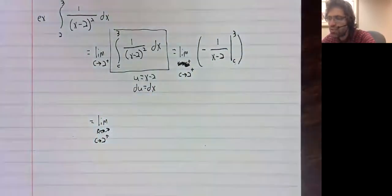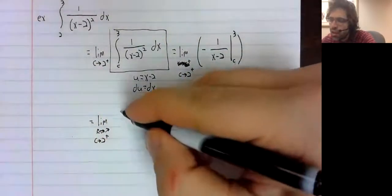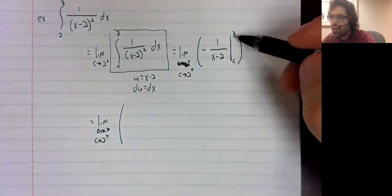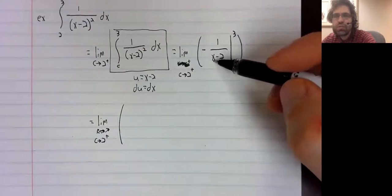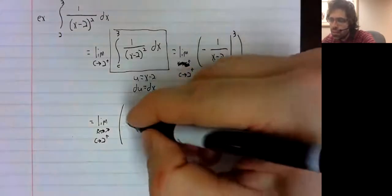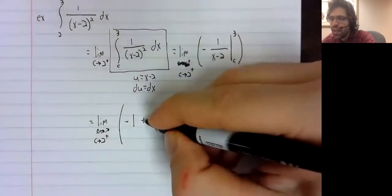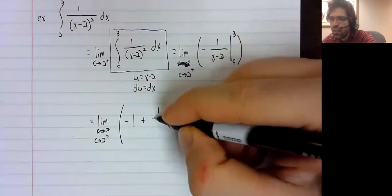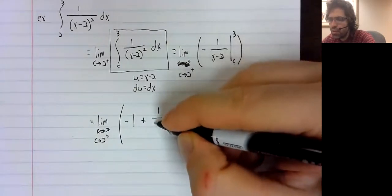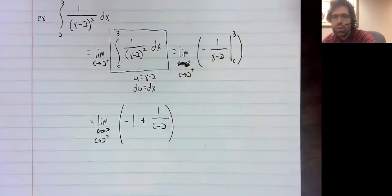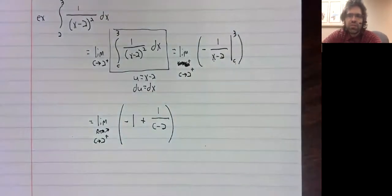We'll take the limit as C approaches two and see what happens. Three goes in. Three minus two is one, negative one. Negative one minus negative one over C minus two.